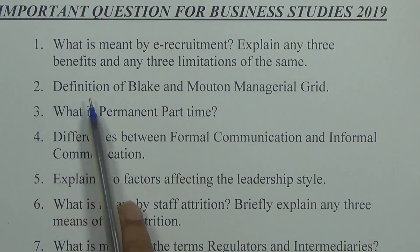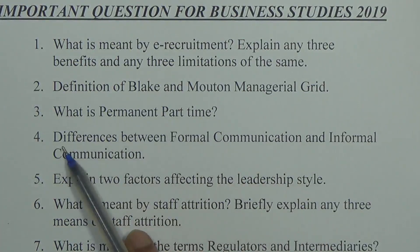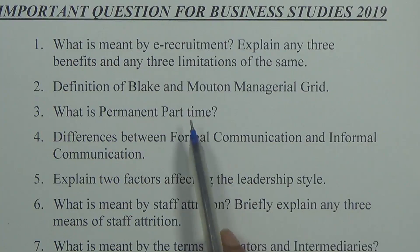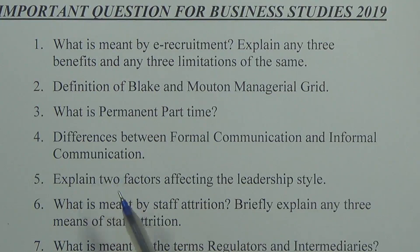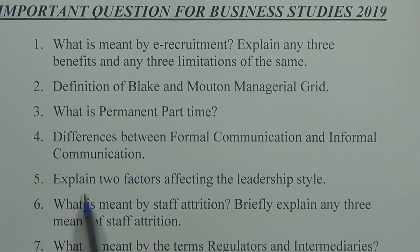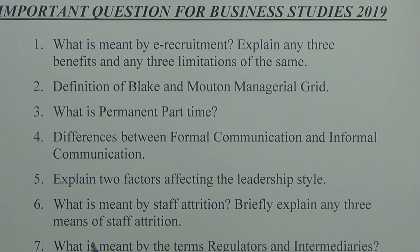Question 2: Write the definition of Blake and Mouton's Managerial Grid. Question 3: What is permanent part-time? Question 4: Explain the difference between formal communication and informal communication — formal communication deals with business/work topics, while informal communication covers everyday conversation. Question 5: Explain two factors affecting leadership. Question 6: What is meant by staff attrition? Briefly explain any three means of staff attrition.